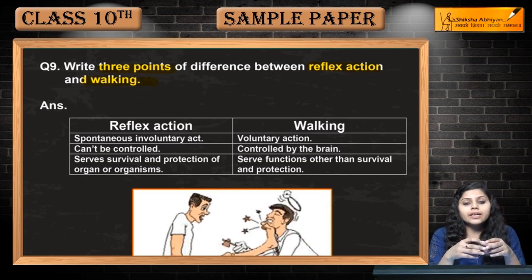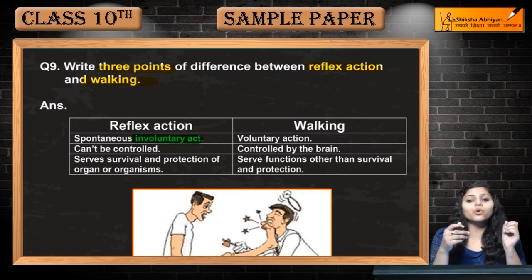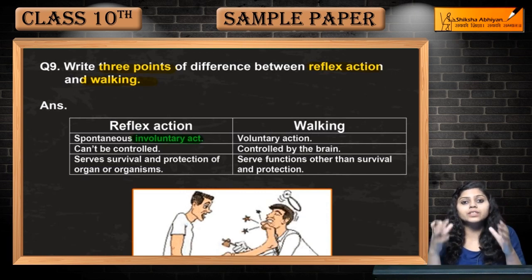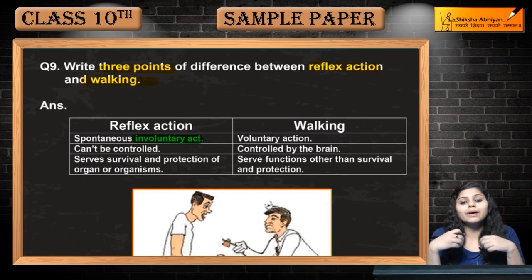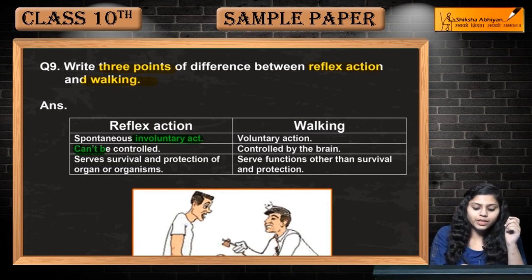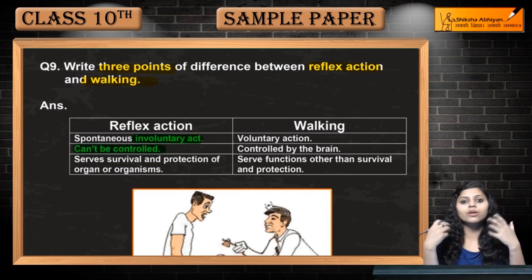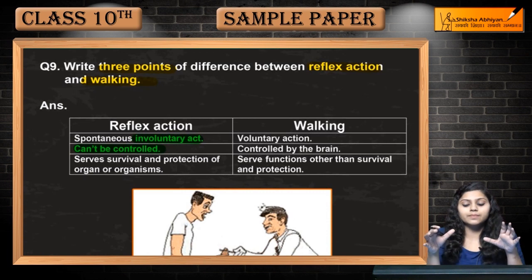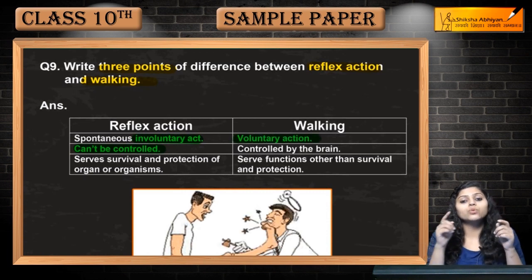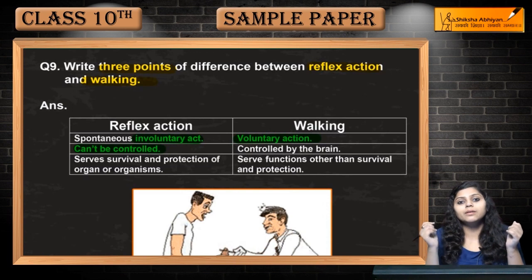What is reflex action? It is an involuntary, spontaneous action. Our body is not controlled by our brain. Whereas walking is a voluntary action, which can be controlled by our brain.